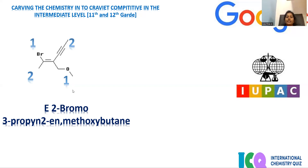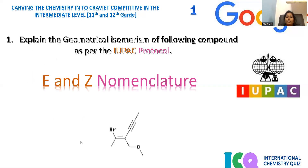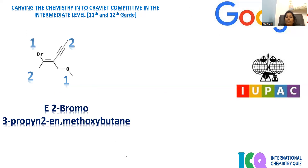The inclination is one and one on opposite sides, so E is given. This is the IUPAC nomenclature given for this kind of organic compound as per the IUPAC protocol. Move on to question number two.